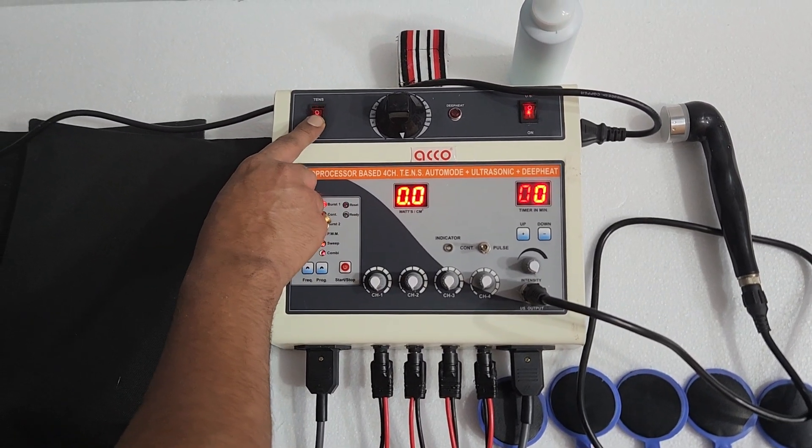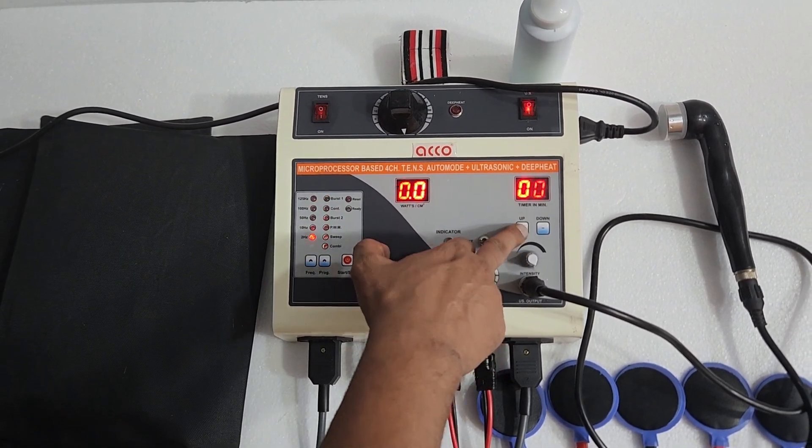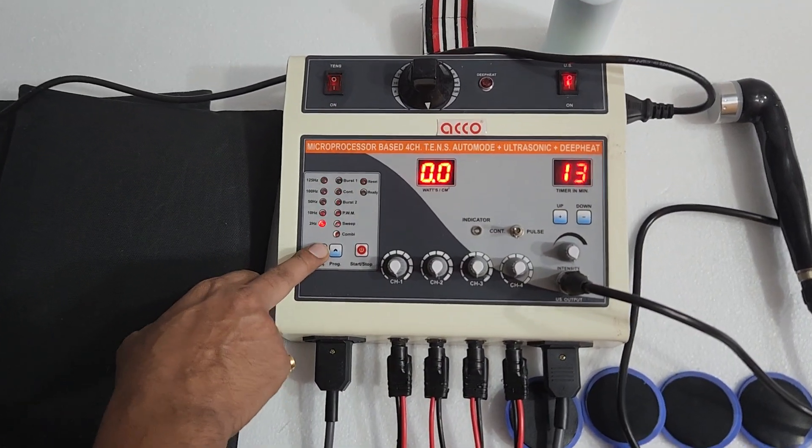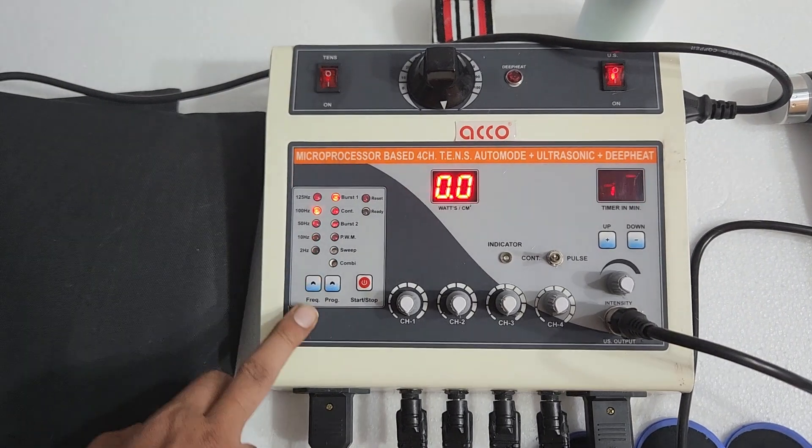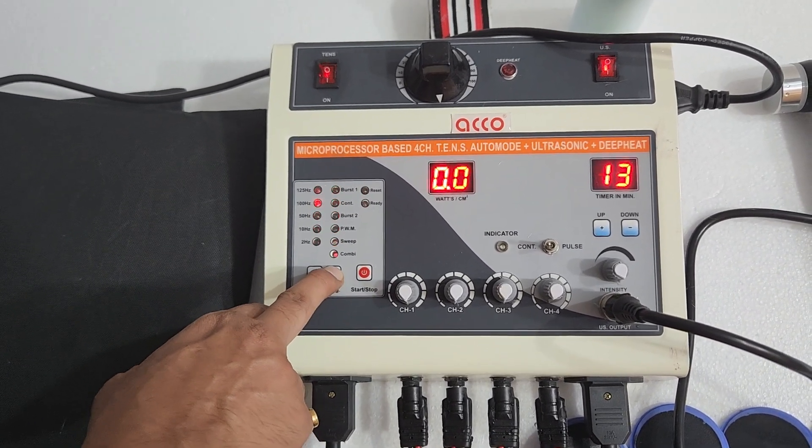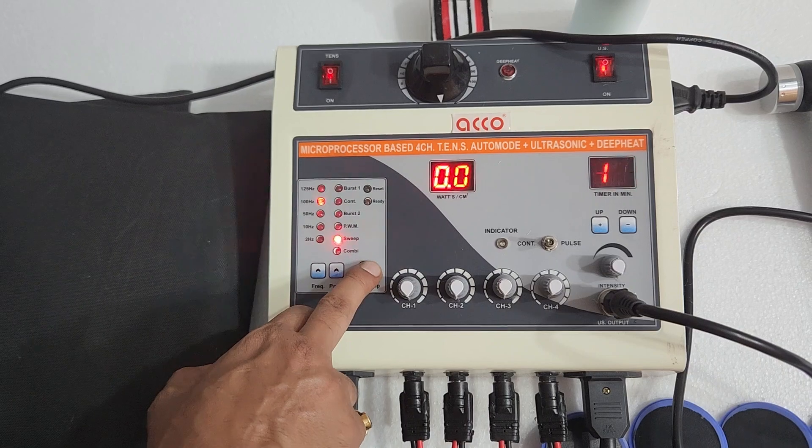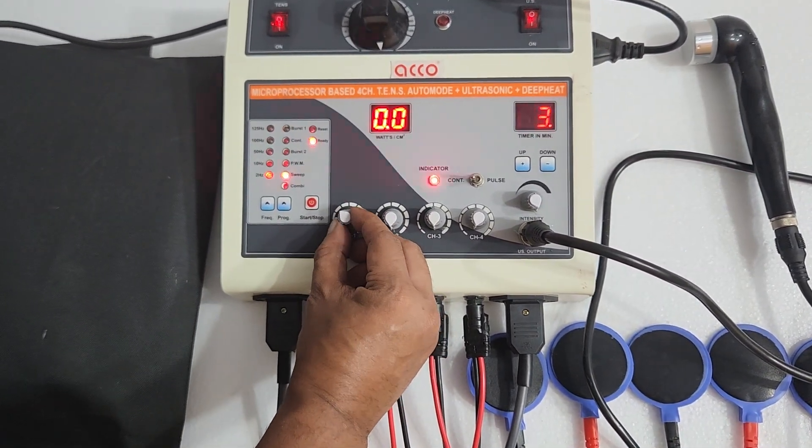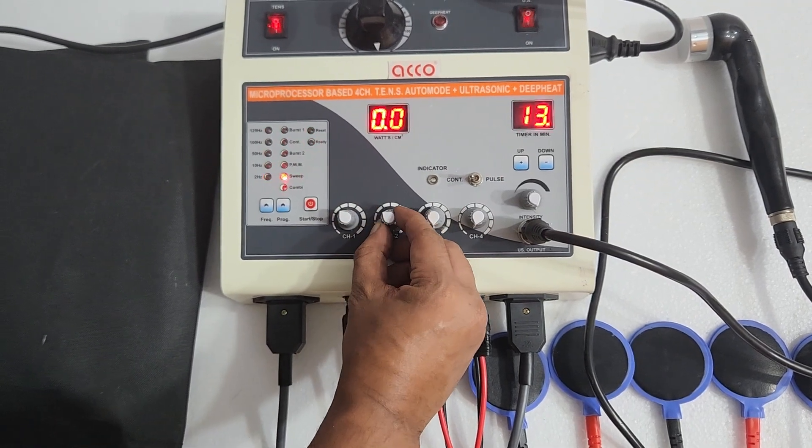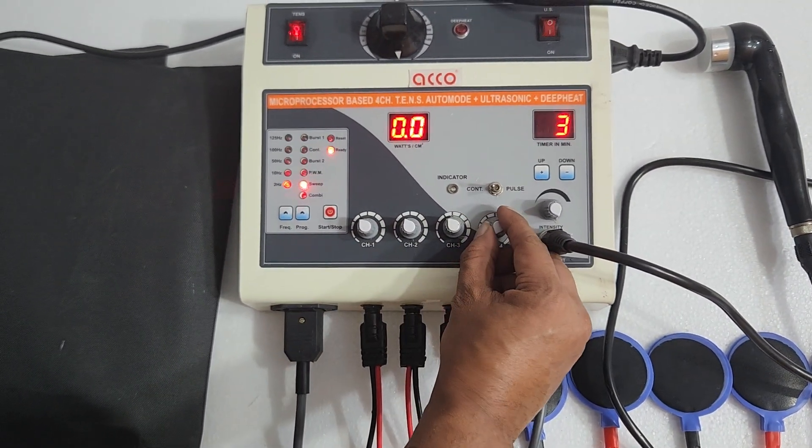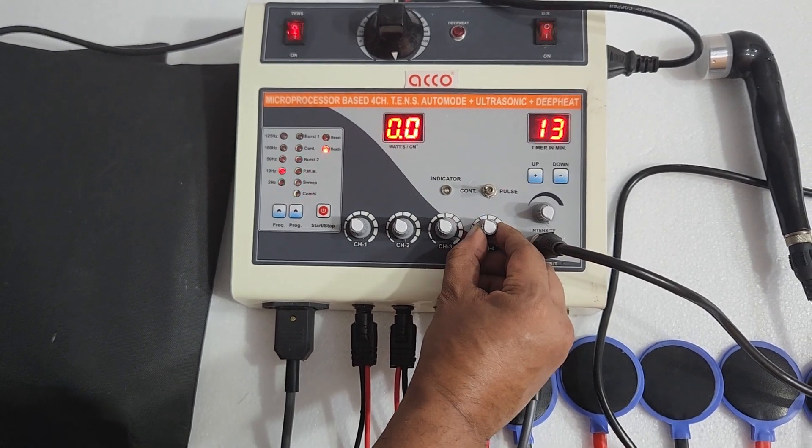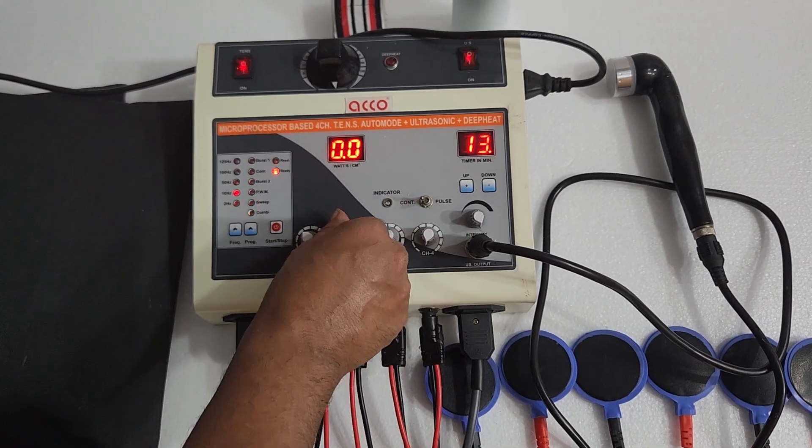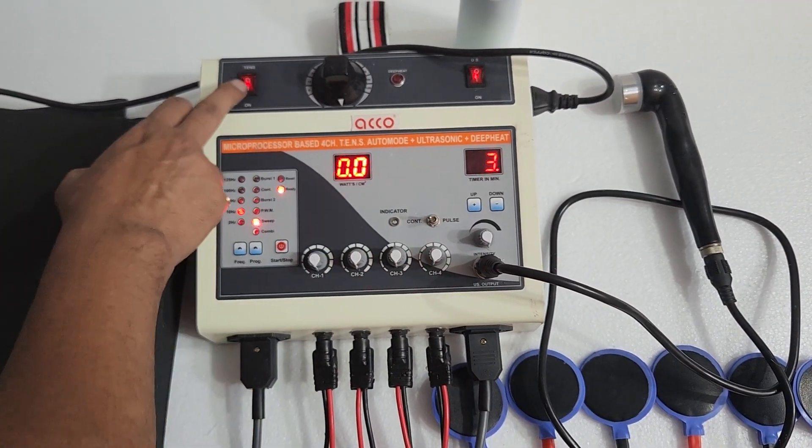Now for TENS, switch on the machine and set the timer. From here you can set the frequency. From here you can set the programs. Then press start. Increase the intensity as per your requirement for channel 4. Once the treatment is completed, make the intensity knob at 0 and switch off the machine.